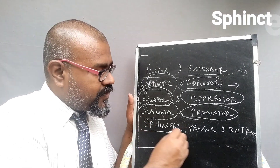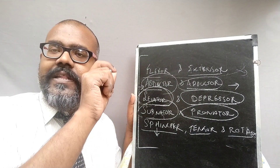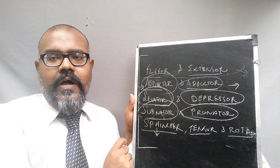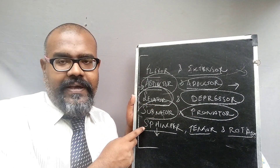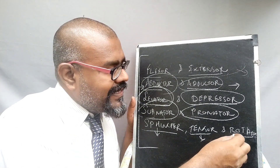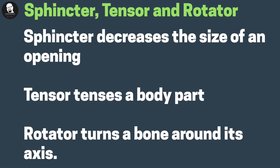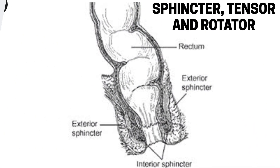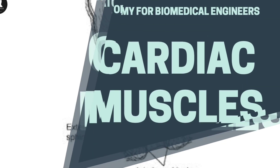The last types are sphincter, tensor, and rotator. The sphincter muscle is present exclusively at the openings of the human body, and it controls the decrease and increase of those openings. The tensor muscle gives the tense nature to the human body. The rotator gives the ankle rotation or axis rotation of the body.